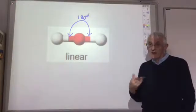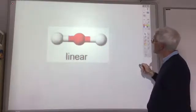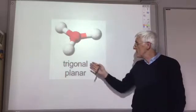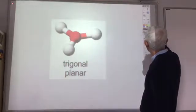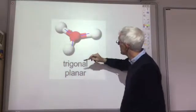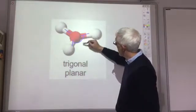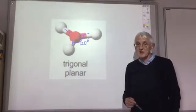If you had three electron pairs, the shape the molecule would take would be trigonal planar. And here we have our one, two, three electron pairs, all as far apart as possible, which in this case is 120 degrees apart.